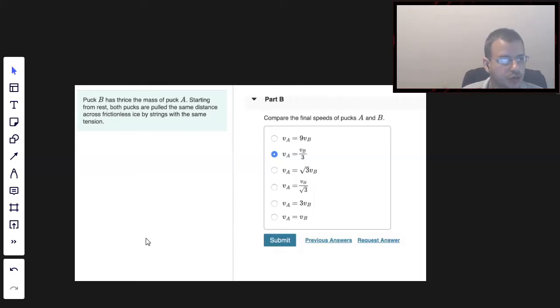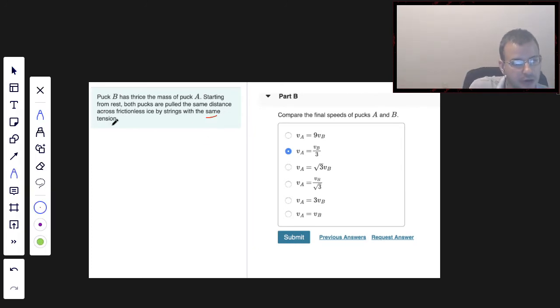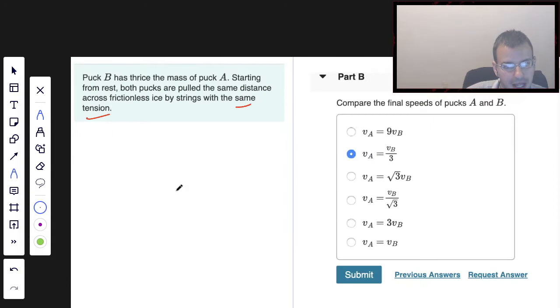Puck B has three times the mass of puck A. Starting from rest, both pucks are pulled the same distance across frictionless ice by strings with the same tension, meaning that the same force is applied.